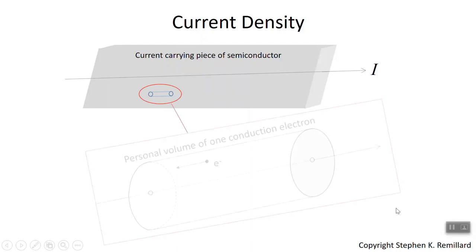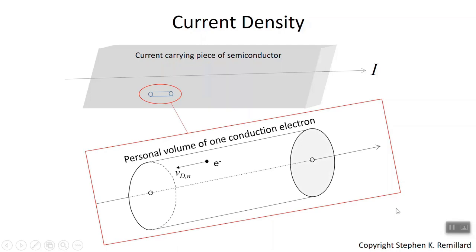Inside that personal volume is one charge carrier. I've depicted an electron with a velocity vector going to the left, v sub dn — d is for drift, n is for electron. There are no other carriers in this cylinder, which is described as the personal volume of one conduction electron.